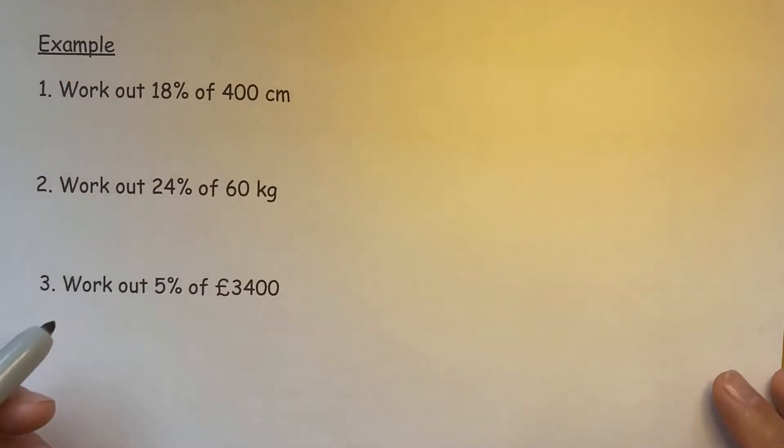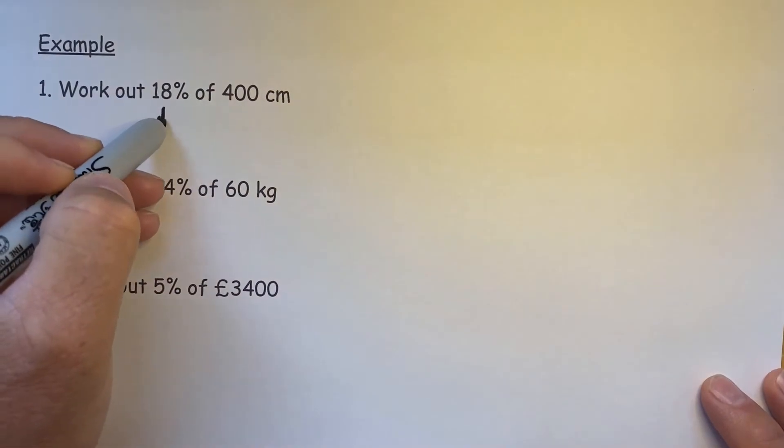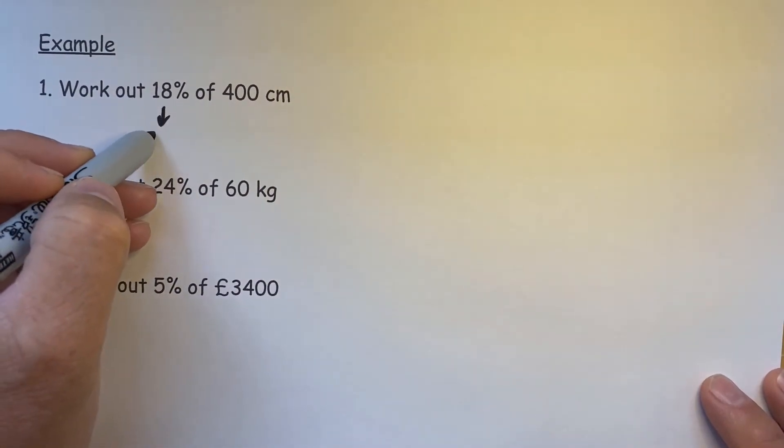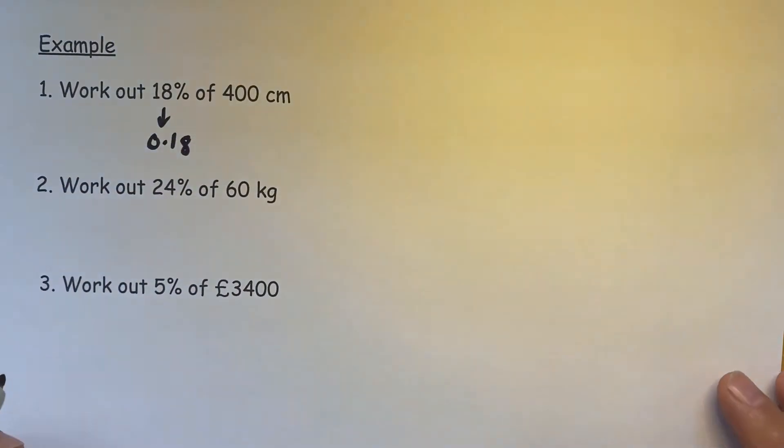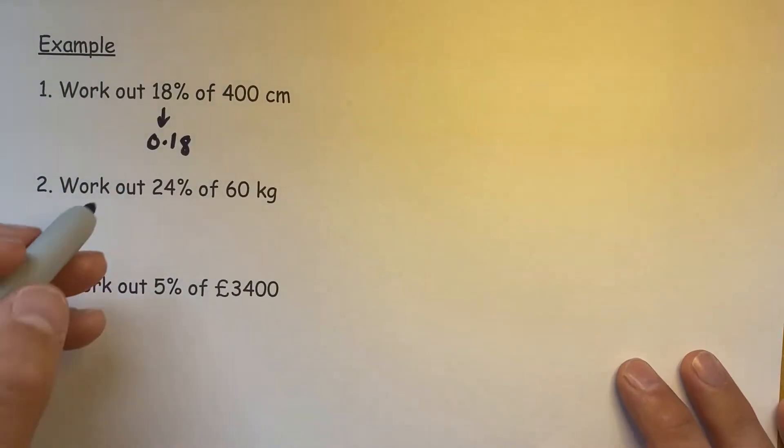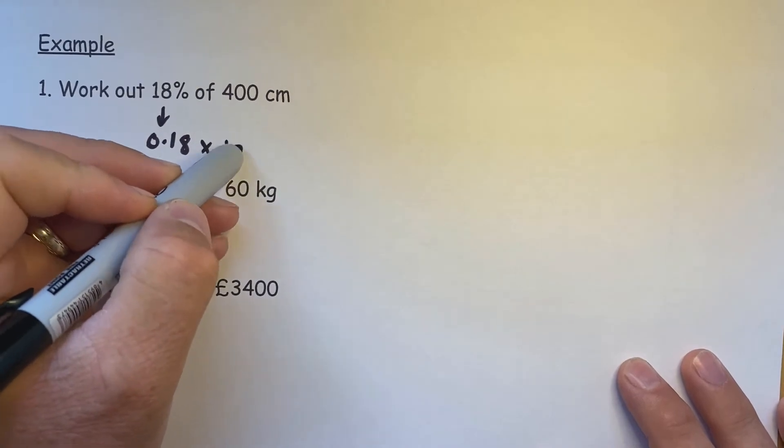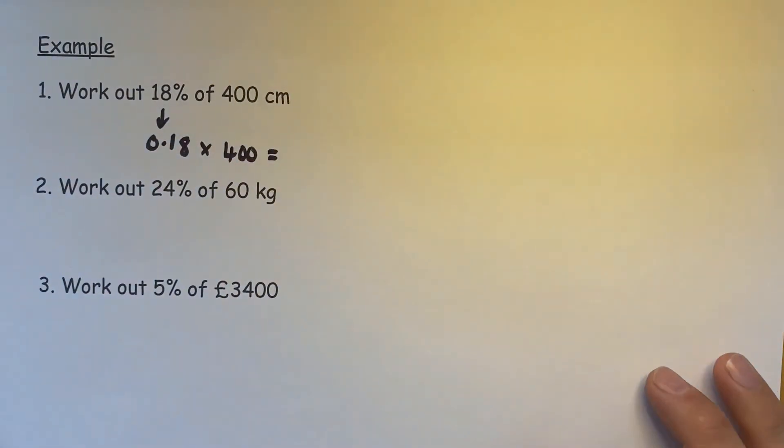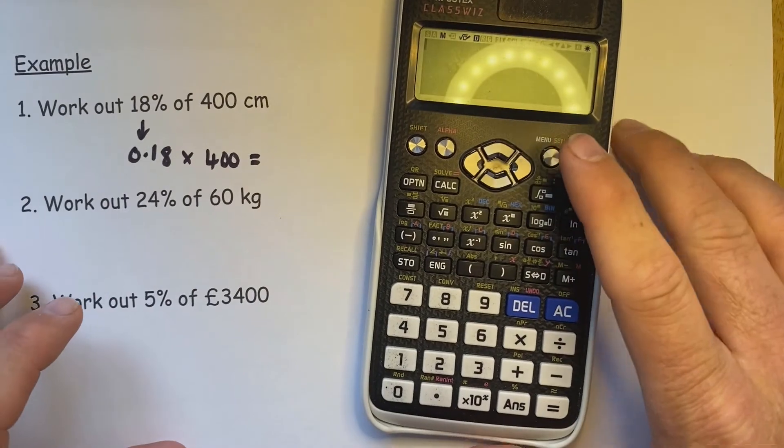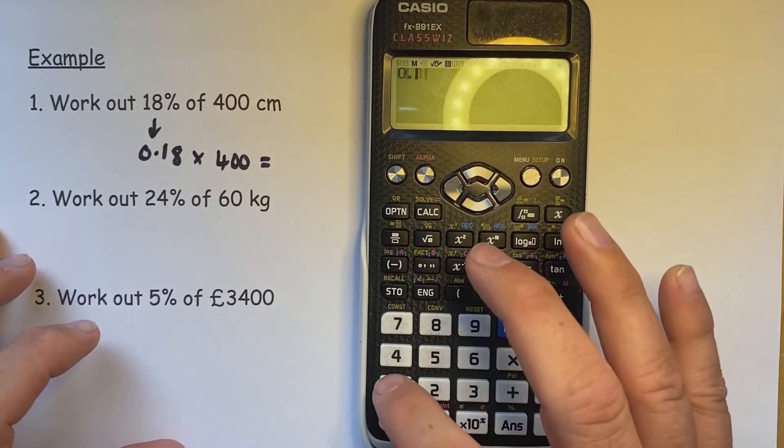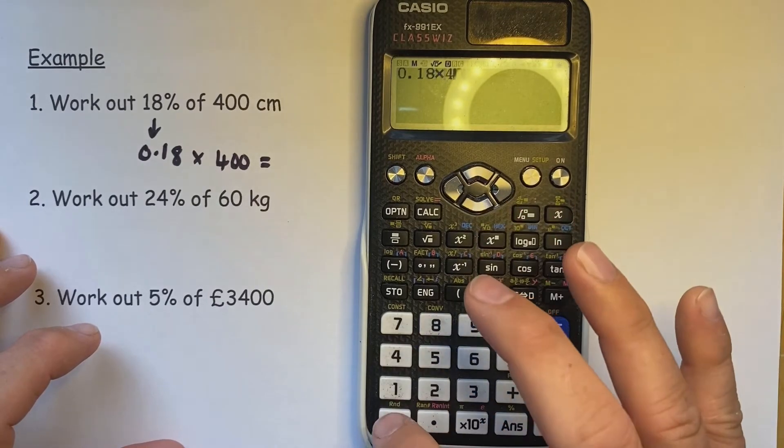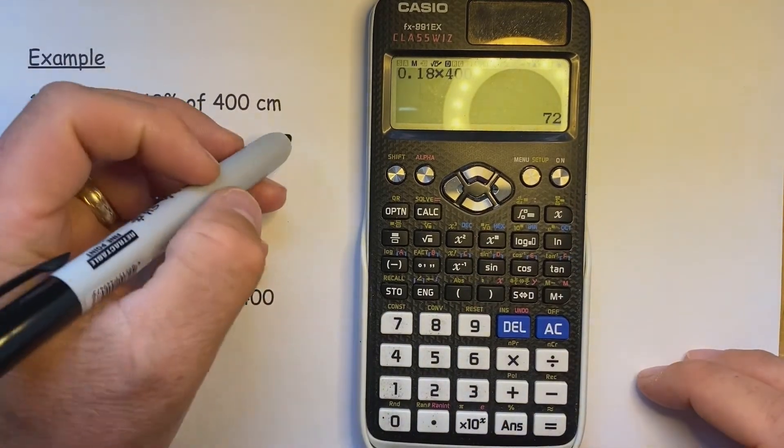Now percentages with a calculator are much easier, as long as you place that into decimal form. So I'll divide by 100, makes that 0.18 of 400. So times 400, and I'll put the calculator in view. We've got 0.18 times 400 equals 72.